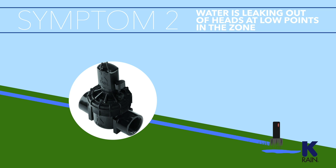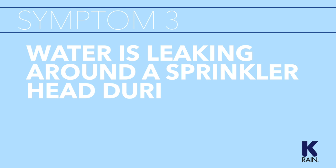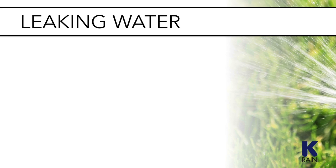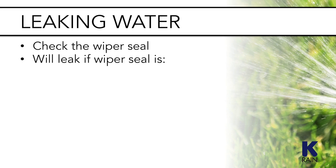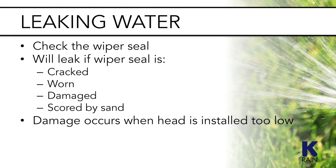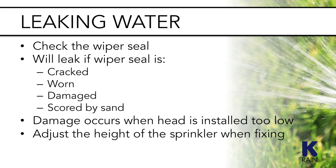Repairing or replacing the valve will generally solve this problem. Symptom number three: water is leaking around a sprinkler head during operation. If water is leaking from a sprinkler while it is operating, the sprinkler has been damaged. To fix this and prevent it from occurring again, you will need to address both the problem with the sprinkler and the conditions on site that created it. The first thing to check is the wiper seal — the sprinkler will leak if the wiper seal is cracked, worn, or has been damaged or scored by sand. Wiper seal problems are often caused by installing the head just a bit too low. When replacing the sprinkler head or the wiper seal, be sure to adjust the height so it is installed correctly.